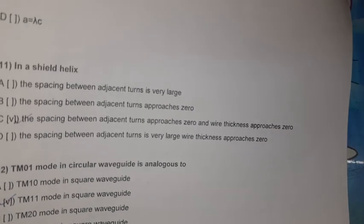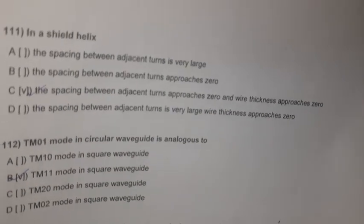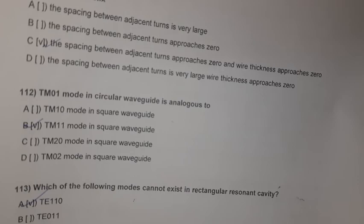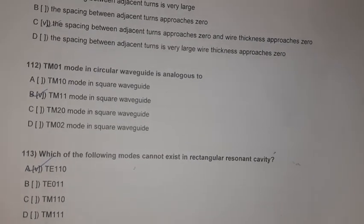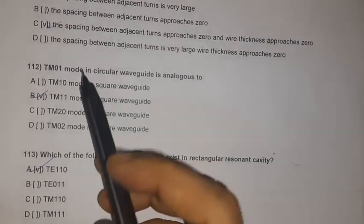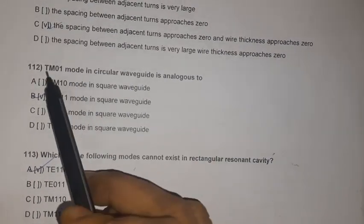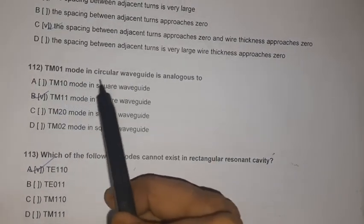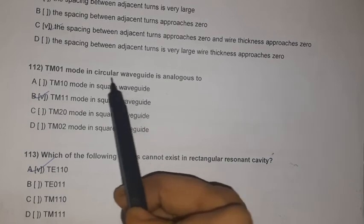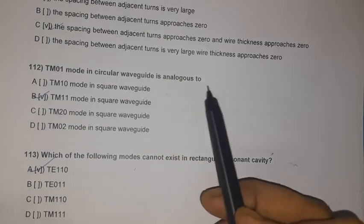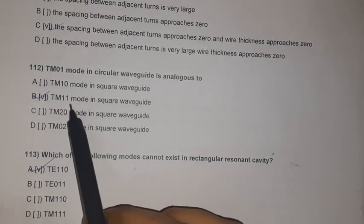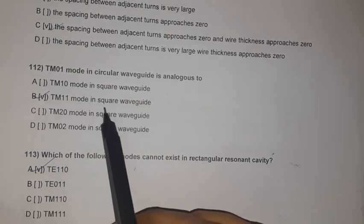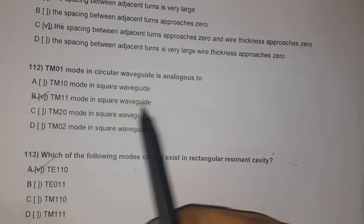Question 110: TM01 mode in a circular waveguide is analogous to TM11 in a square waveguide.